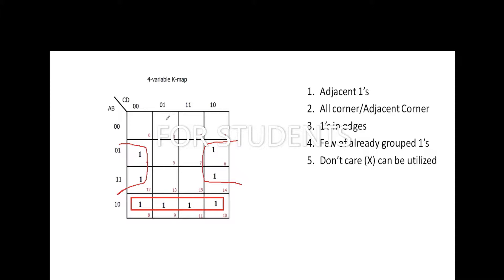Suppose you have a one here at the edges too — edges, so we look at the opposite edge. This is already grouped, but it helps you form the maximal grouping. The aim for maximal grouping is: first octet, then quad, then pair. Always aim for the largest possible group.